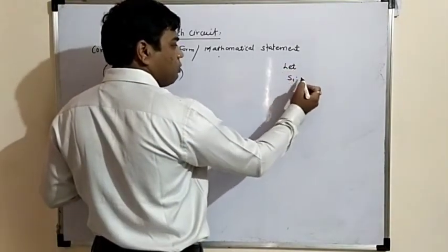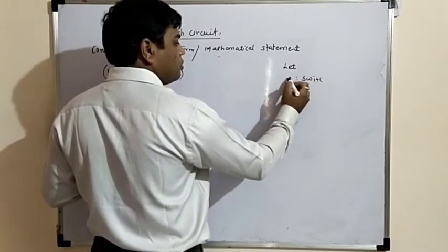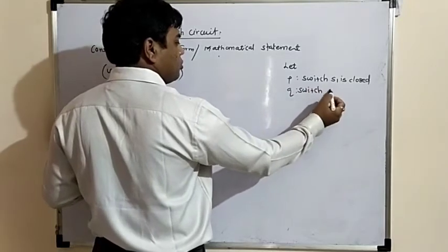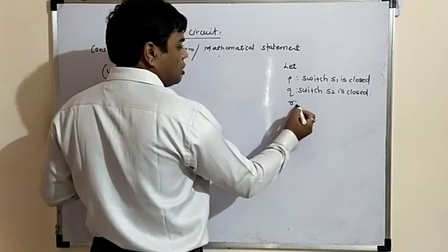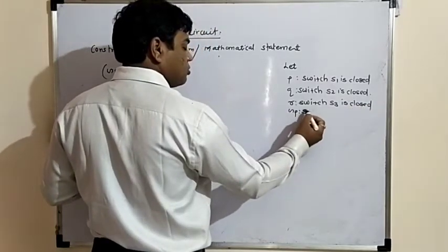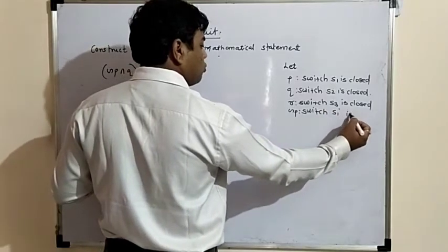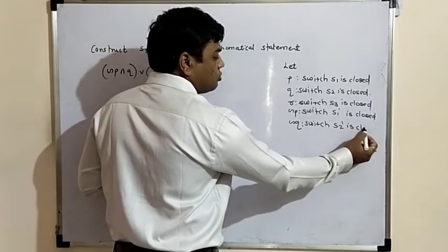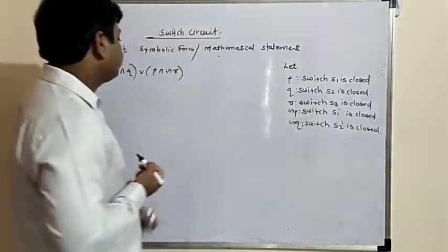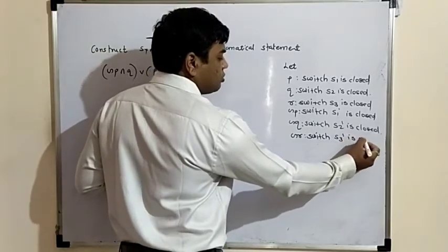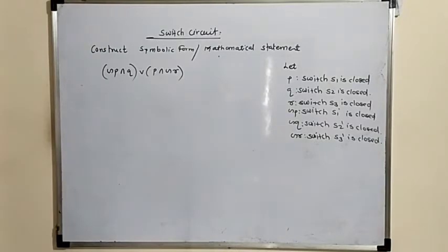Let P be the switch S1 is closed, Q be the switch S2 is closed, R be the switch S3 is closed. Negation P is switch S1 dash is closed, negation Q is switch S2 dash is closed, and negation R is switch S3 dash is closed. In this way there are six statements: S1, S2, S3, and their negations.